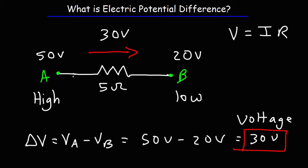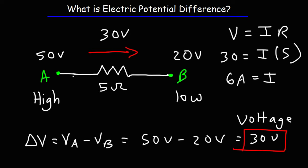So now that we know the direction of the current, we can calculate the current in the circuit. The voltage is 30 volts and the resistance is 5 ohms. Dividing both sides by 5, we get 30 divided by 5, which gives us a current of 6 amps.